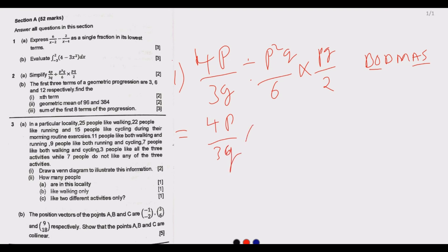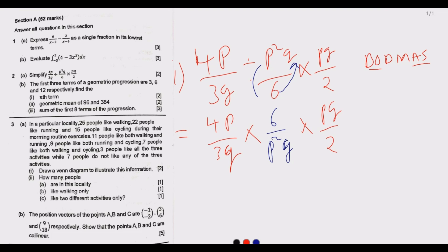We are multiplying. What happens is the fraction flips — since we introduce multiplication, the numerator and denominator swap: 6 becomes the numerator and p squared becomes the denominator, giving us 6 over p squared. Then we continue with the original term pq over 2. Now it's a matter of simplifying: 3 into 6 is 2, and 2 into 2 is 1.